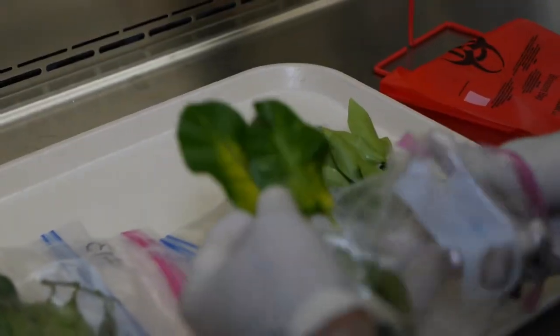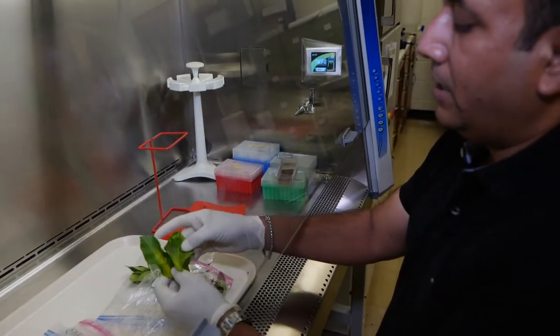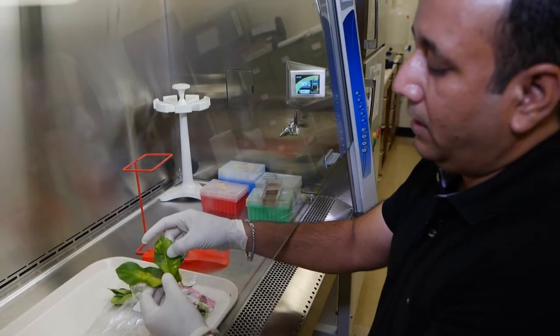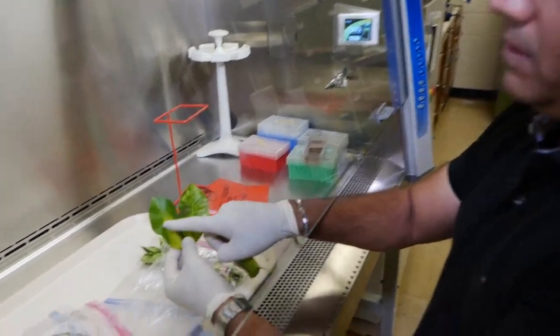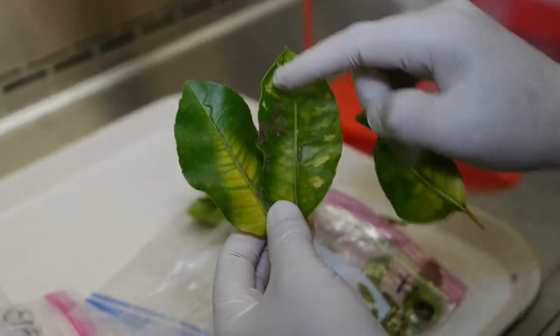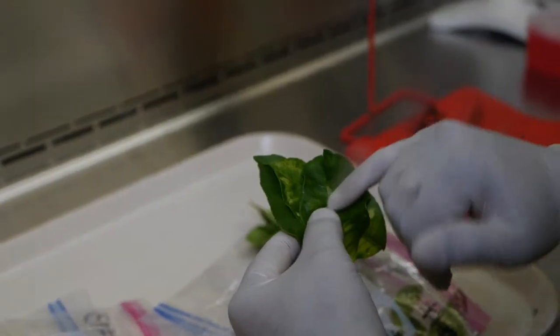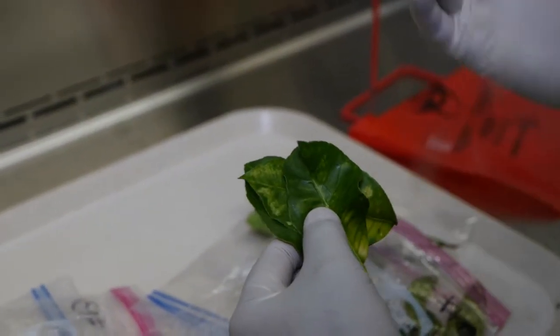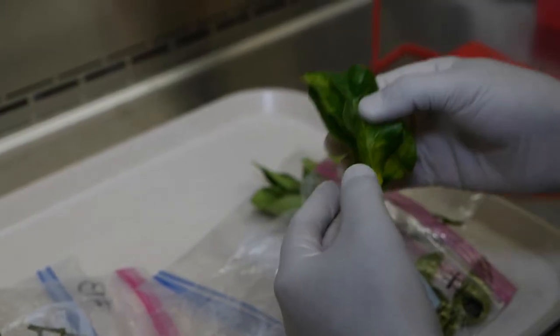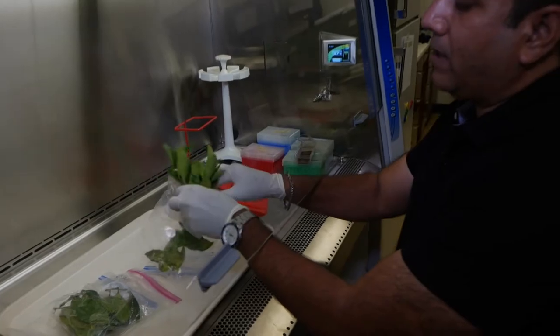But at the same time, this blotchy mottling can easily be caused by a nutrition deficiency. You can see there is some similarity in these two different leaves—similar kind of symptoms—so we definitely need to test it. For this testing, we have to take the midrib samples out. We do the DNA extraction and then run that with specific reagents that will only amplify the citrus greening DNA if it's there.